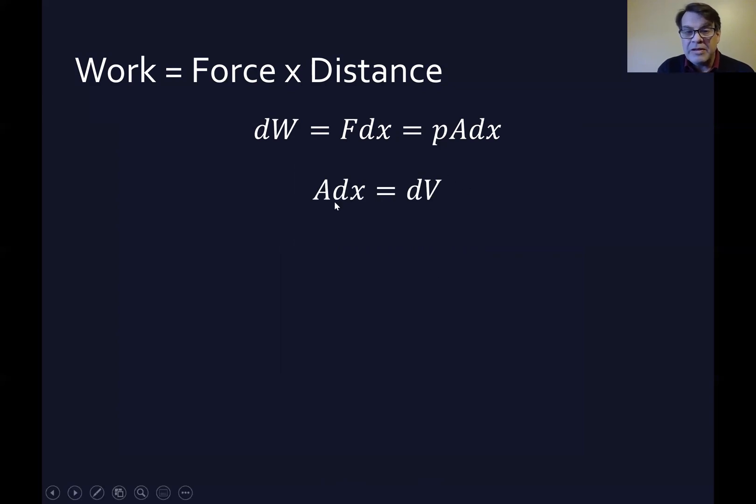Now we know that the area, which is two-dimensional, times an incremental change in depth is the volume. Area is two-dimensional, volume is three-dimensional. So if we take the area of something and multiply it by an incremental change in the distance it moves, we get the incremental change in the volume. Area times dx, we can substitute dV there, and we have that the incremental change in work equals the pressure times the incremental change in volume. Now we're getting somewhere.